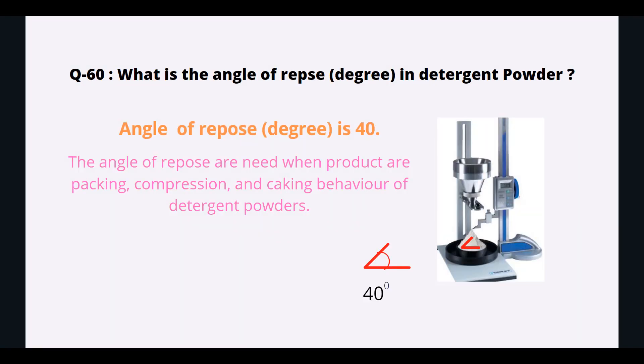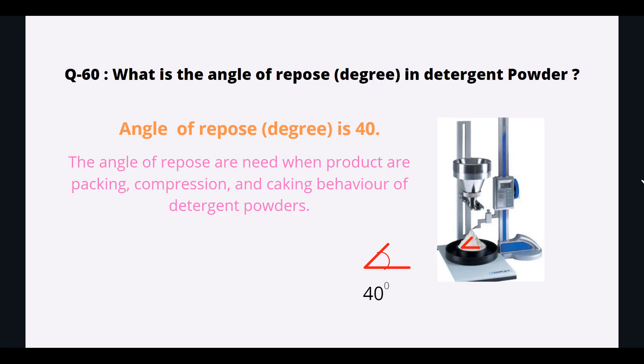What is the angle of repose in detergent powder? The angle of repose is 40 degrees. The angle of repose is relevant when products are being packed, and relates to the compression and caking behavior of detergent powder.